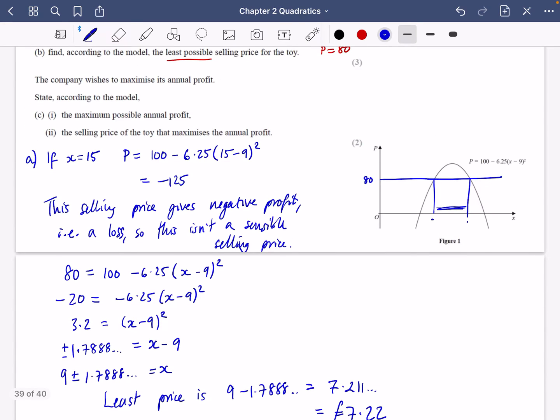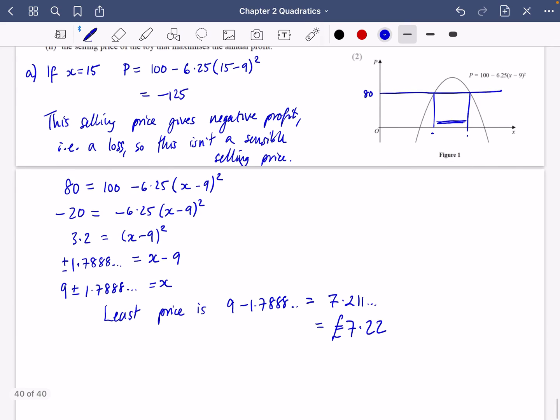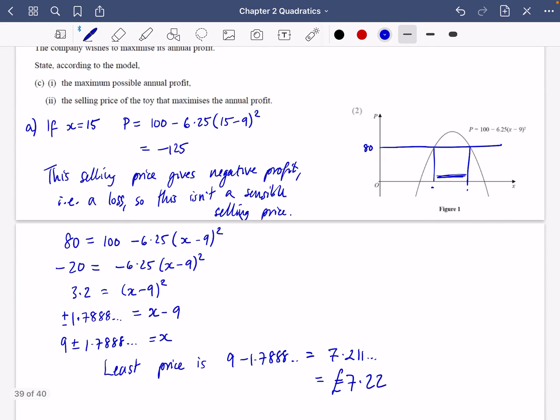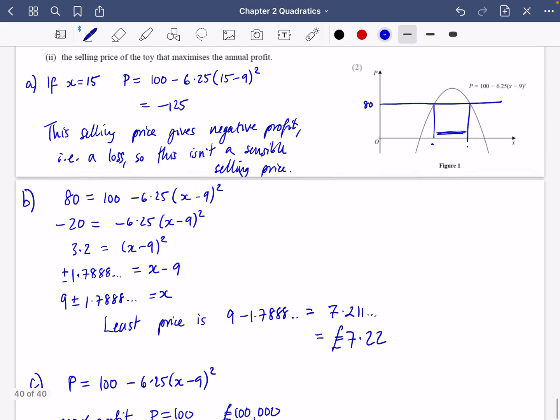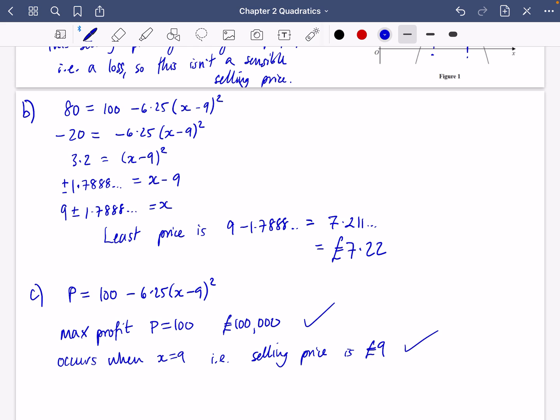The company wishes to maximize its annual profit. State according to the model, the maximum possible annual profit and the selling price that maximizes the annual profit. So this is B and then C that we've got here. Well, it's already in completed square form. Profit equals 100 - 6.25(x - 9)². So the maximum profit is literally just going to be that P equals 100, which we should say is £100,000. And this occurs when x equals 9, i.e., the selling price is £9. Maximum annual profit, selling price is £9.